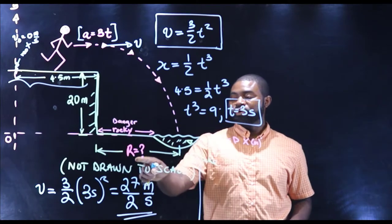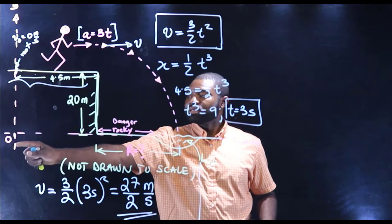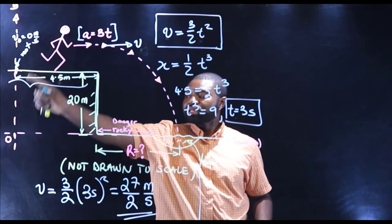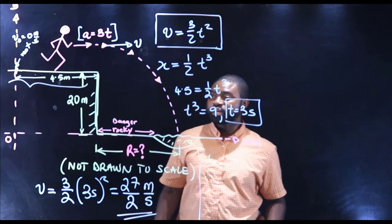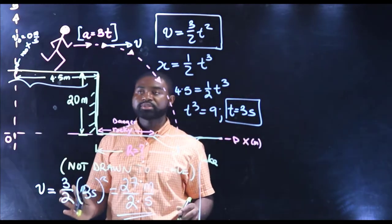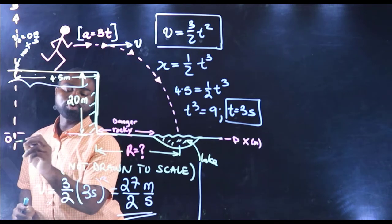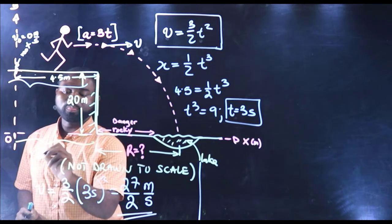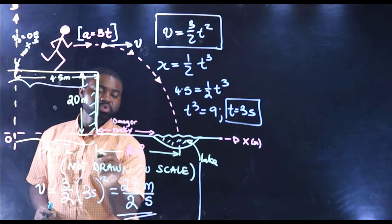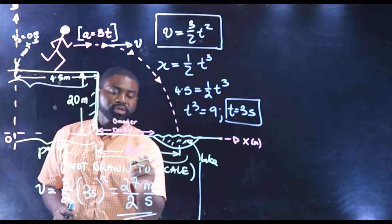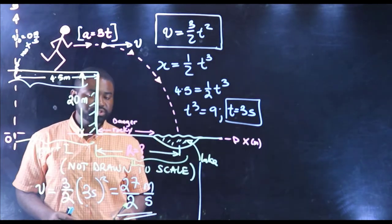And R, the journey starts running from the origin O. So we are going to divide the motion into two parts. Part one is the motion from here to here. This is part one. And part two is the motion from here to here. This simply is part two.